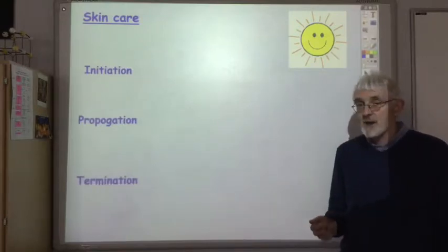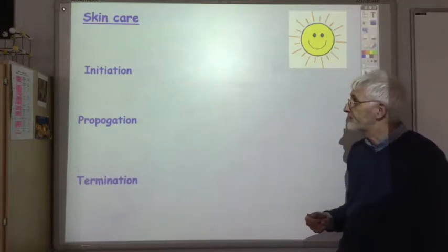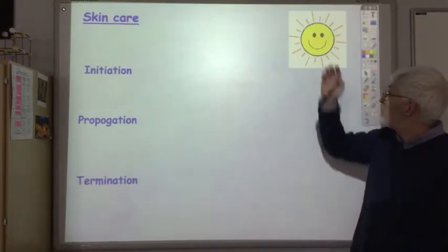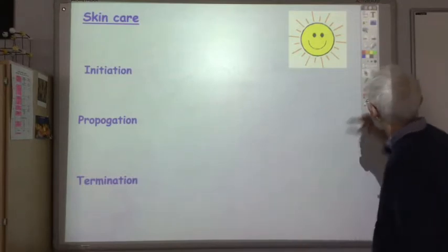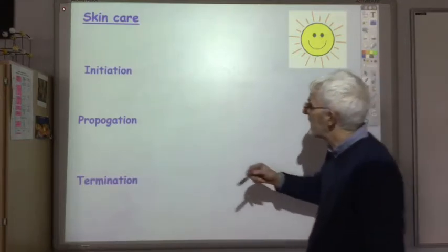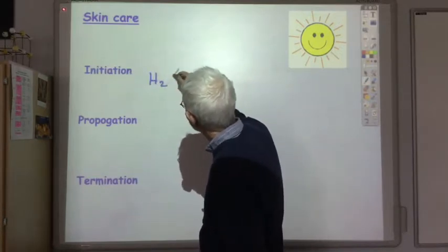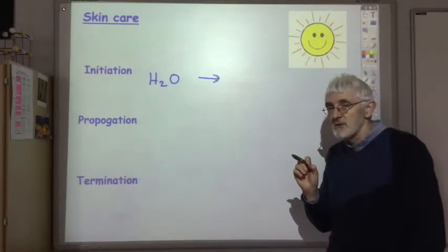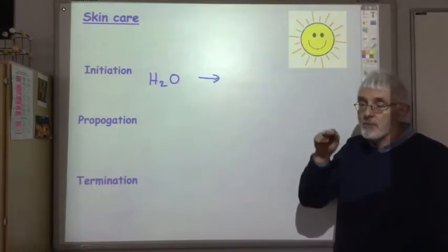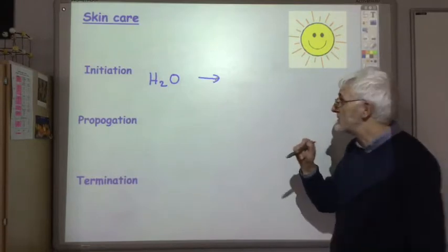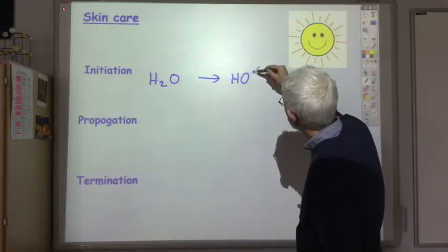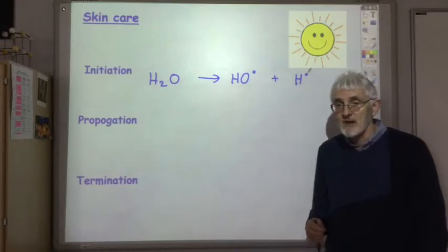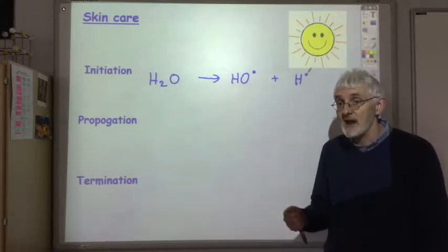All free radical chain reactions have a three-step process: an initiation step, a propagation step, and a termination step. In the initiation step, you produce free radicals, so it initiates the process, and it'd be the ultraviolet light from the sun which initiates it. For example, the ultraviolet light can interact with water molecules in your skin and it breaks one of the OH covalent bonds in such a way that both atoms involved in the bond get one of the electrons back. We produce an OH free radical and an H free radical. This dot represents a free radical, so a free radical is a very unstable, very reactive substance.